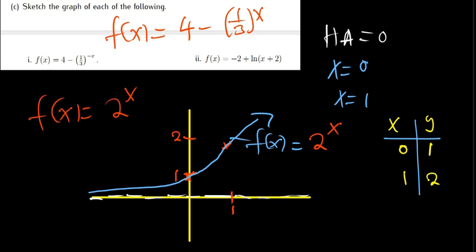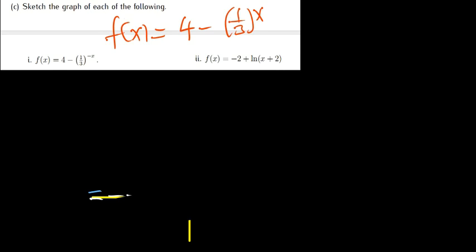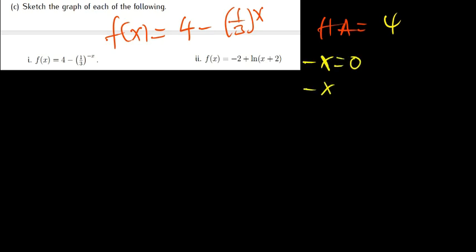Now let's sketch the actual question. You can pause the video and try it out first. The question is f(x) = 4 - (1/3)^(-x). First identify the horizontal asymptote: the number without an exponential is 4, so the horizontal asymptote is y = 4.